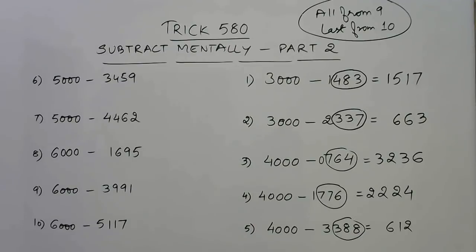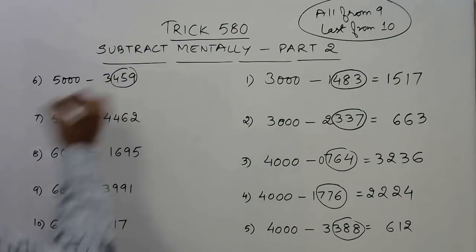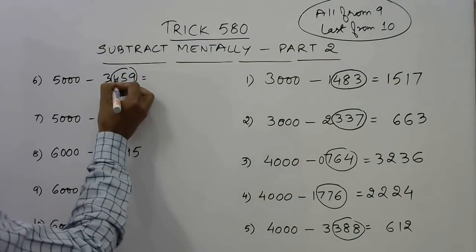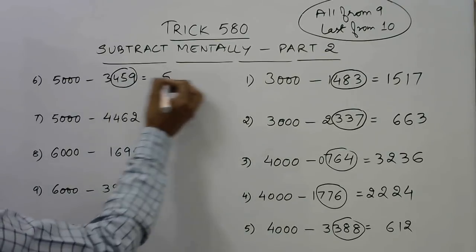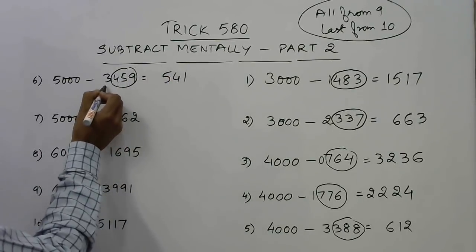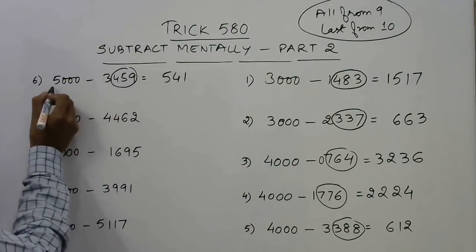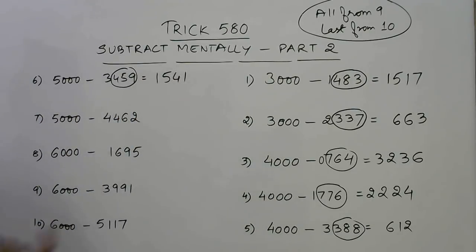Now let us subtract numbers from 5000. Take 5000 minus 3459. Apply 'all from 9 and last from 10' to the last three digits 459: 9 minus 4 is 5, 9 minus 5 is 4, 10 minus 9 is 1. Increase the leading digit 3 by 1 to get 4, and 5 minus 4 is 1. The difference is 1541.